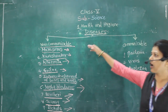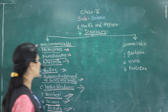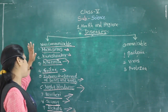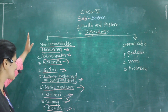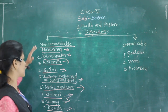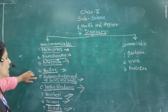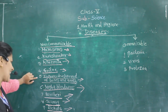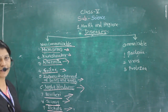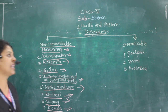These are all non-communicable diseases — they are not spread from person to person. The list includes marasmus, kwashiorkor, anemia, goiter, improper development of bones and teeth, night blindness, beriberi, scurvy, and rickets.